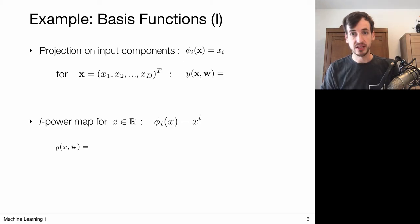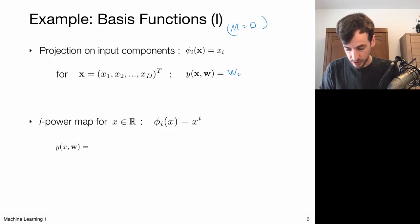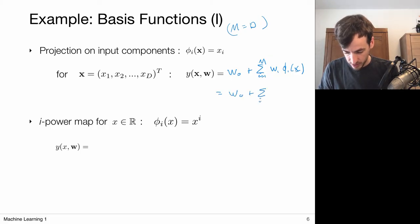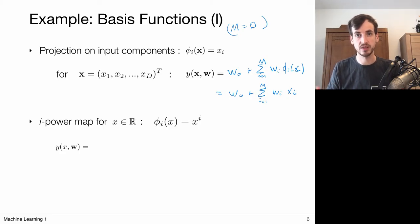Let's say my basis functions are these projection operators, which take as input the full vector X and project it to one of its components. The i-th basis function selects only the i-th component. In this case, the number of basis functions equals the dimensionality of my vector. If I write this out — bias term plus the sum over these basis functions with a weight applied to each — that gives me W0 plus the sum from i=1 to M of W_i * X_i. So with such projection-based basis functions, I just re-obtain my linear regression model.